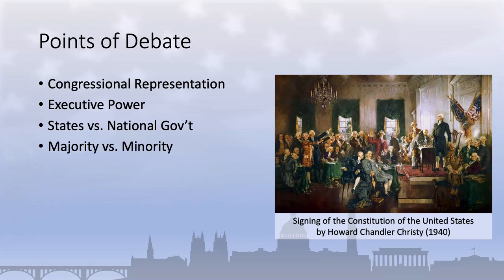And finally, the issue of slavery also plagued the convention. Some delegates, primarily from the northern states, opposed slavery and sought to include provisions in the Constitution to limit or abolish it. However, other delegates, particularly those from the southern states, were in favor of preserving slavery and resisted efforts to include such provisions.